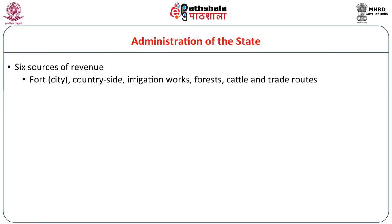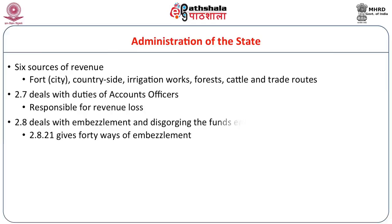Six sources of revenue are recognized: from the fort (the city), from the countryside, irrigation works, forests, cattle, and trade routes. Then we have various adhyayas dealing with duties of accounts officers, chapters dealing with embezzlement of funds and rules on disgorgement of funds. Earlier, if somebody was found embezzling funds, the investigation ended with disgorging the funds — that is, taking the funds back.